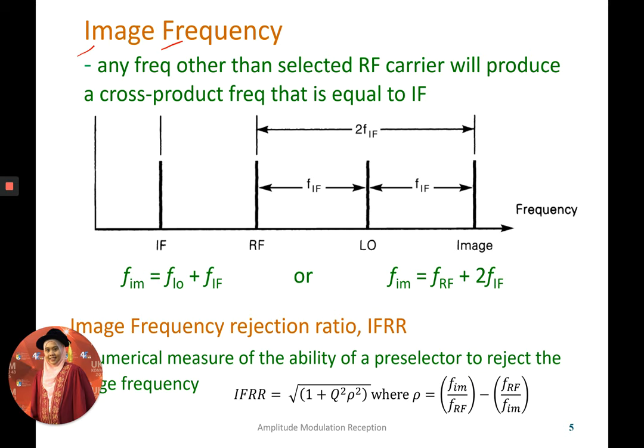So beside IF signal, there are one more frequency that you may find on the spectrum and the value of the frequency is much greater than the LO, RF and IF. So the image frequency, basically we can try to find the value by getting it. You don't need to add the frequency of LO and the frequency of RF. If you don't know the frequency of LO, you may use this equation where the frequency of RF plus two times IF. You will get the same value, image frequency.